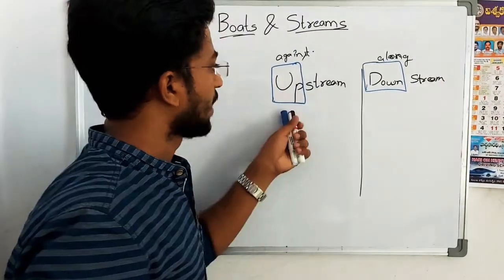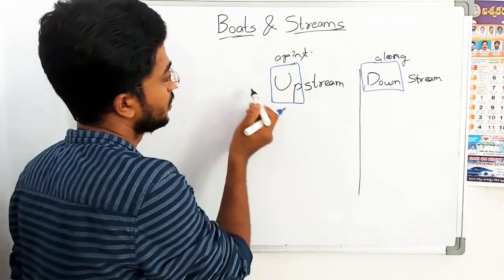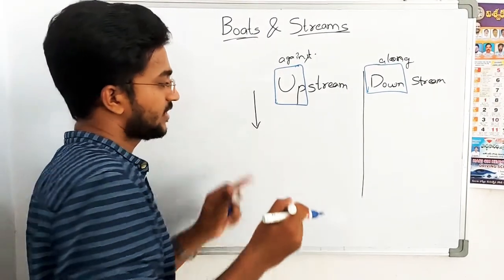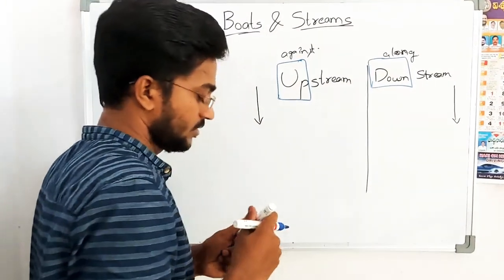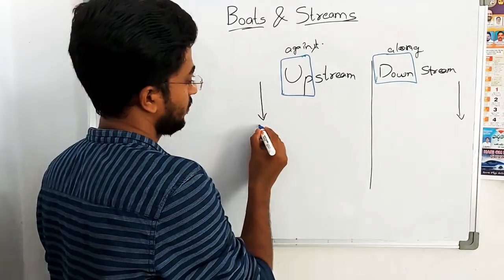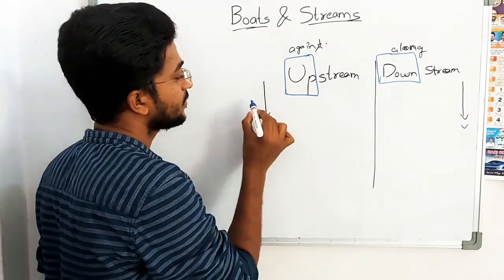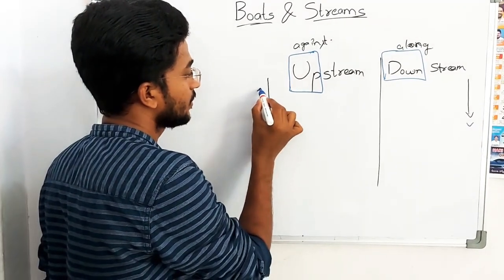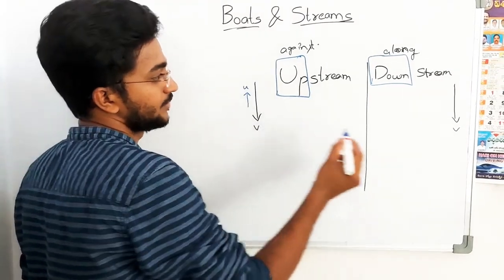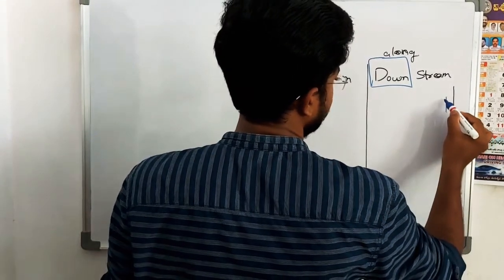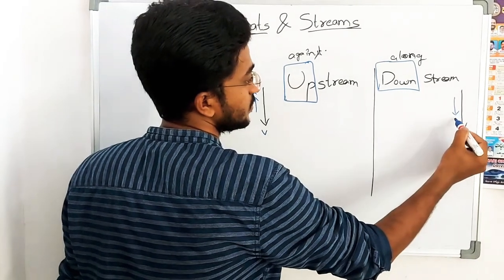So upstream and downstream relate to the direction of the river. The direction of the river gives us V, the stream speed. When the boat is upstream, the boat moves opposite to the river direction. When the boat is downstream, it moves along the river flow in the same direction. This is the speed of the boat in each case.